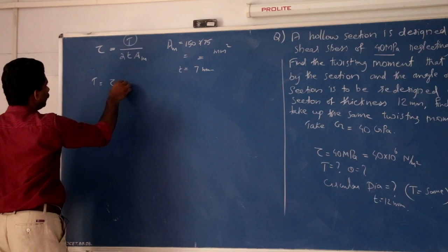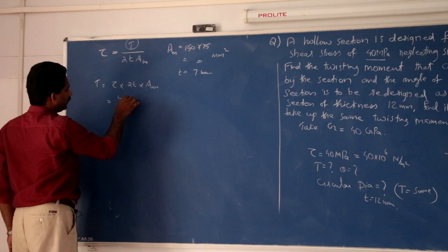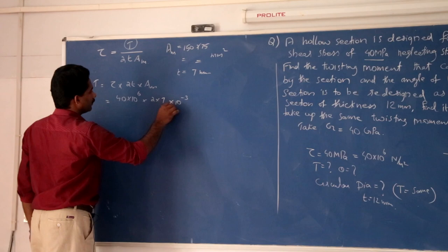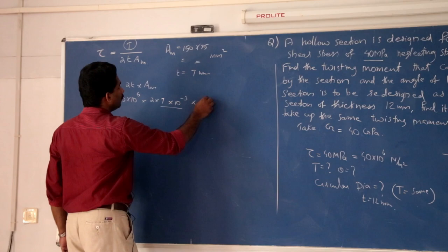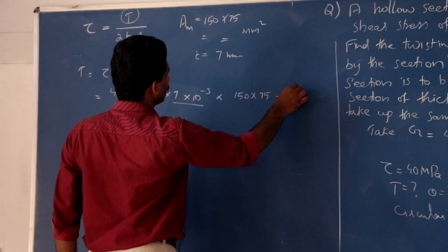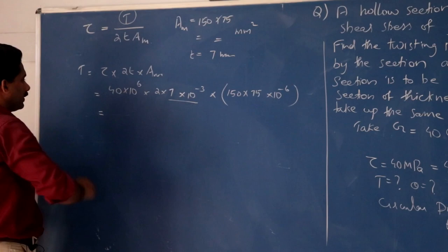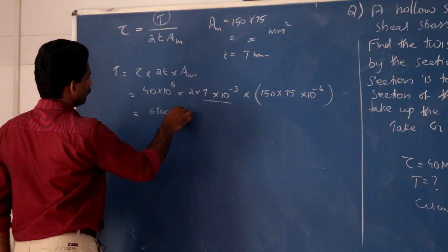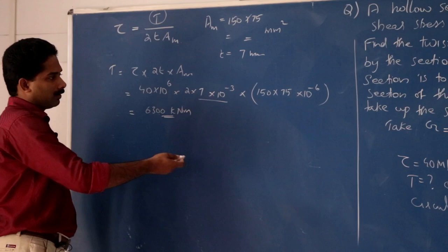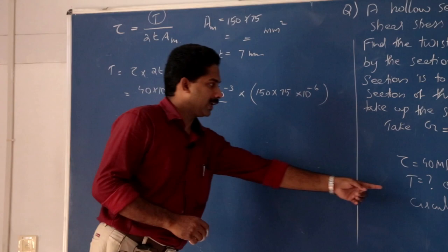Then we can find out the only unknown T. So, torque is equal to tau into 2T into mean area Am. That is 40 into 10 raised to 6 into 2 into 7 into 10 raised to minus 3 meters, then area 150 into 75 into 10 raised to minus 6. Carrying out the calculation, we get the torque 6300 kilonewton-meter. So, a huge torque can be taken up by this rectangular section.